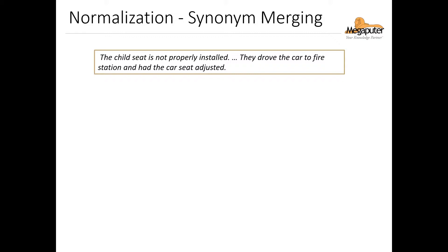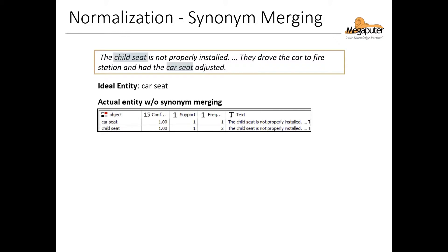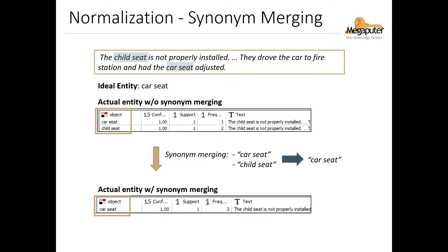Let's start with synonym merging to take care of the different expressions for car seat. Ideally, we'd like both instances extracted as car seat, but right now these are listed as separate entities. If we use synonym merging normalization, car seat and child seat will be standardized to a single expression. The entity will then appear in our output as car seat, and the frequency is now 3.